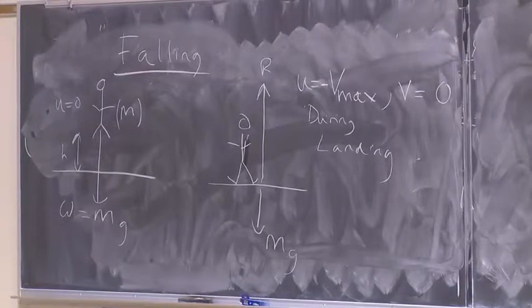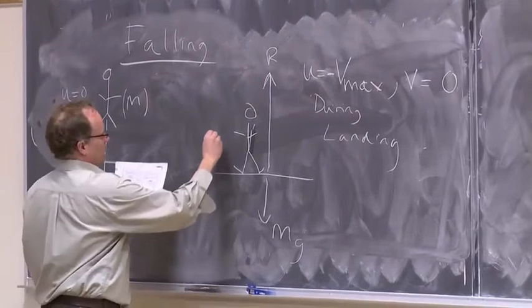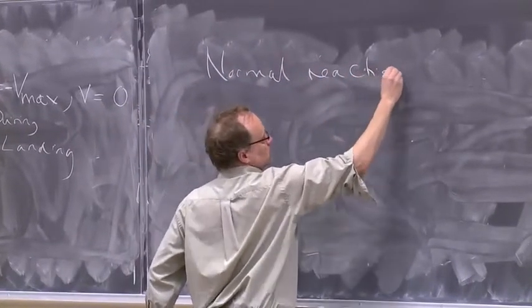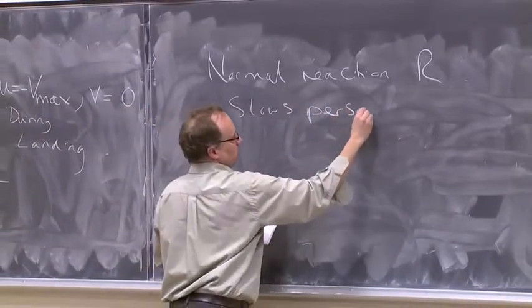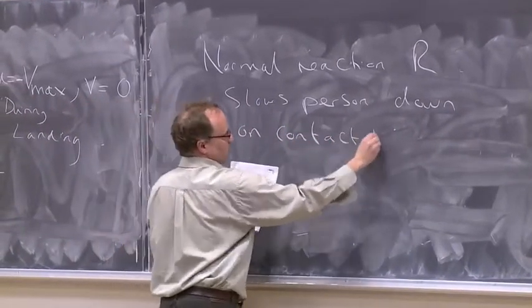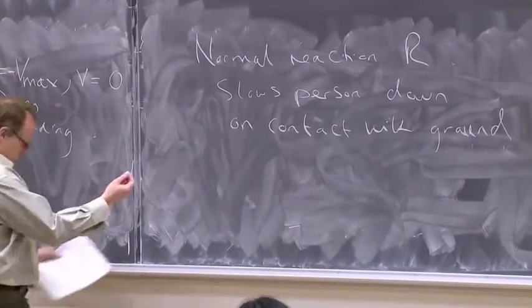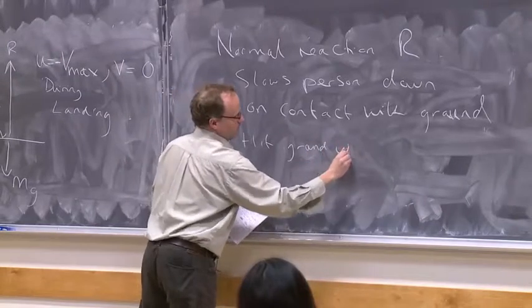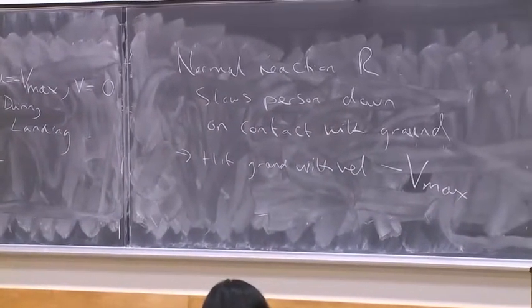So therefore if you look at the acceleration it would be zero minus minus, so it comes out plus. So again your mass would still be m. So the normal reaction R slows you down when they're in contact with the ground. So you could say you can hit the ground with a velocity minus v max. So it makes sense to you that it would be negative because it's going down.